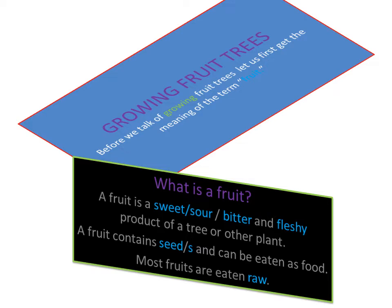A fruit is a sweet, sour, or bitter and fleshy product of a tree or other plant. Fleshy means it has that part that we eat — the part we eat is fleshy, and that part might be bitter, sour, or sweet. A fruit also contains a seed or seeds and can be eaten as food.